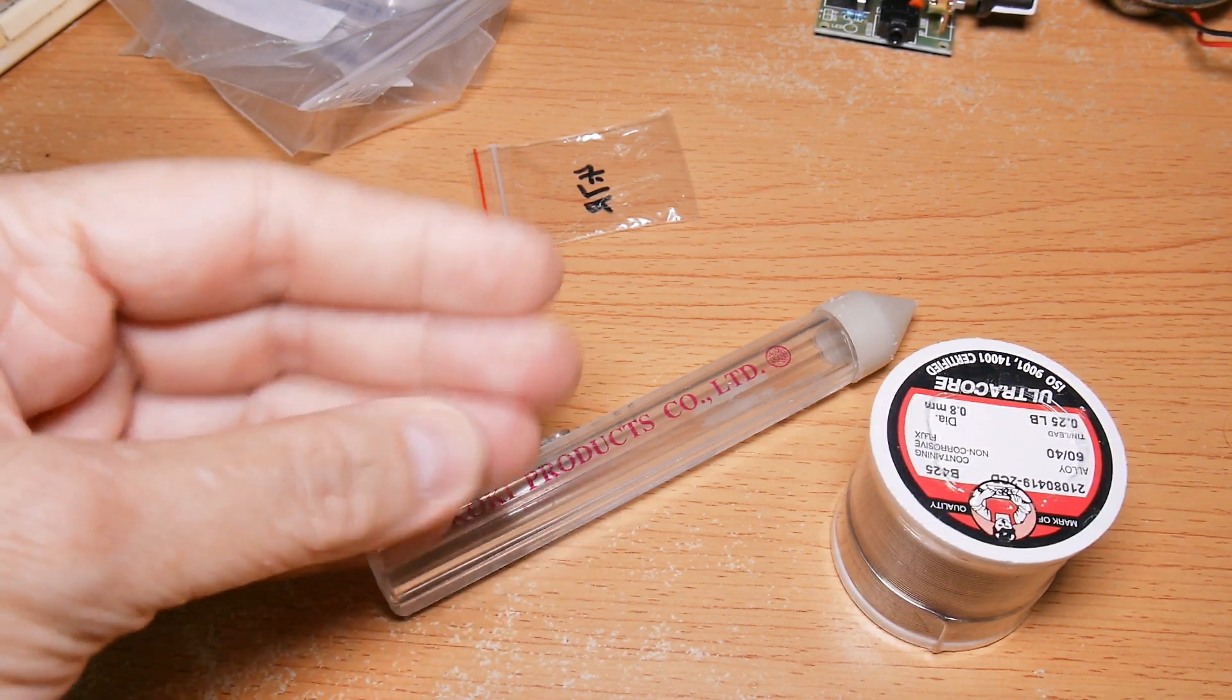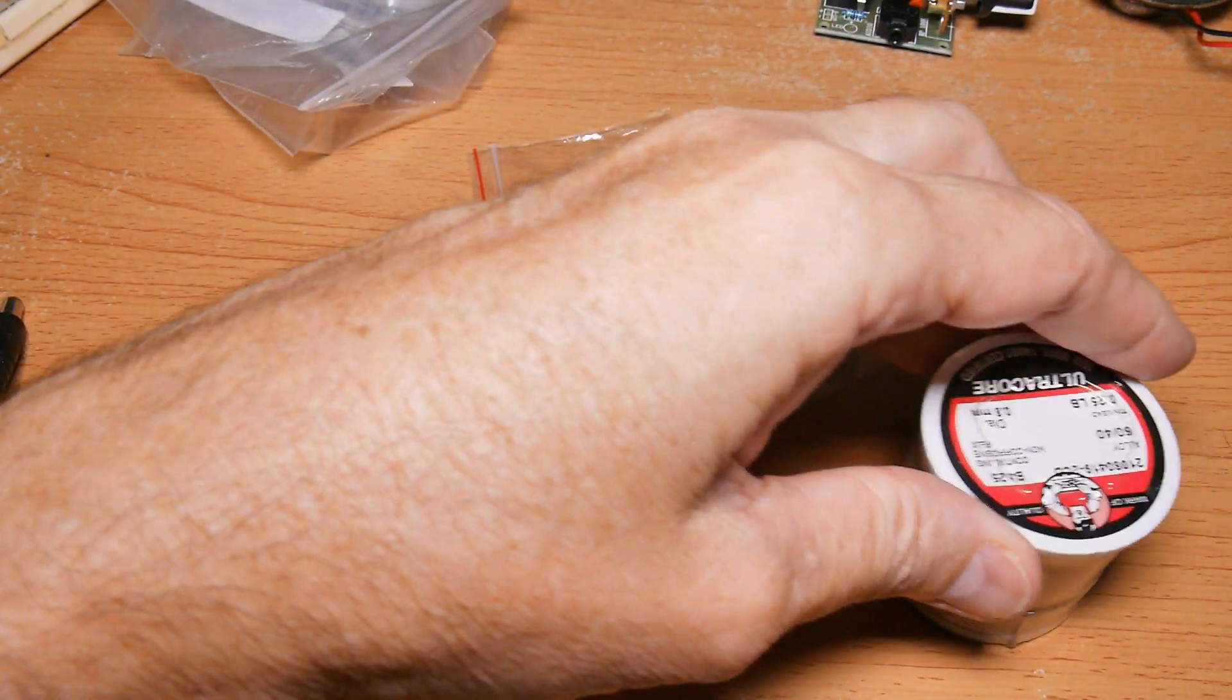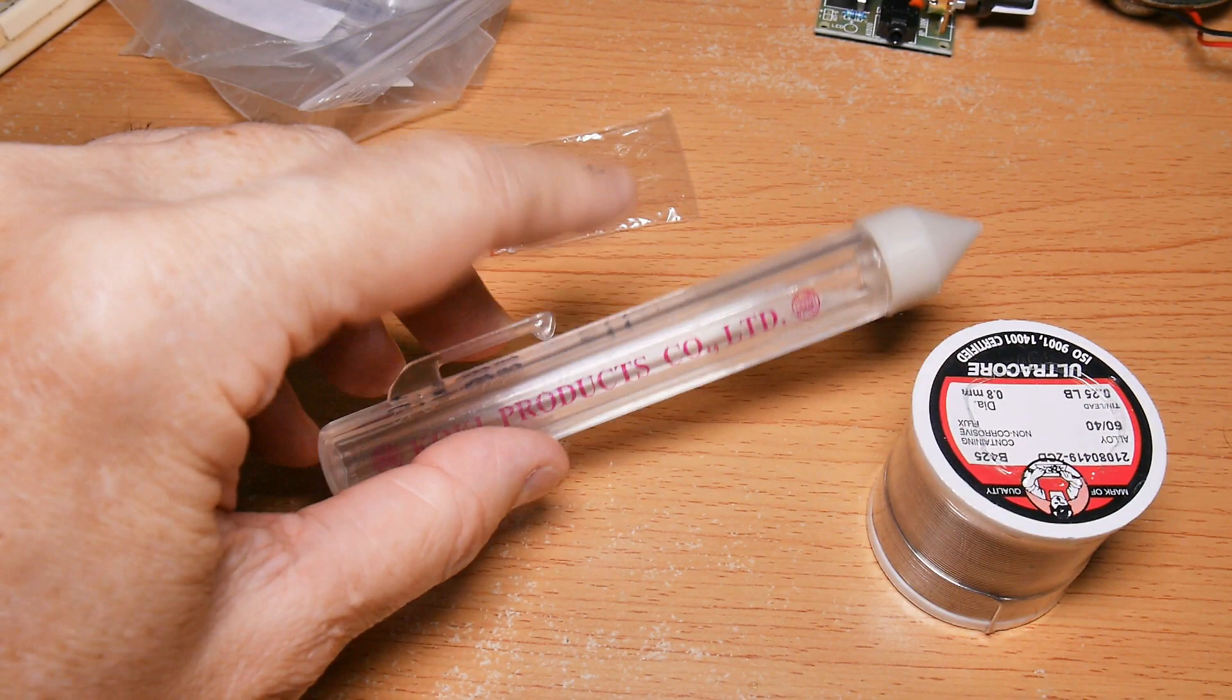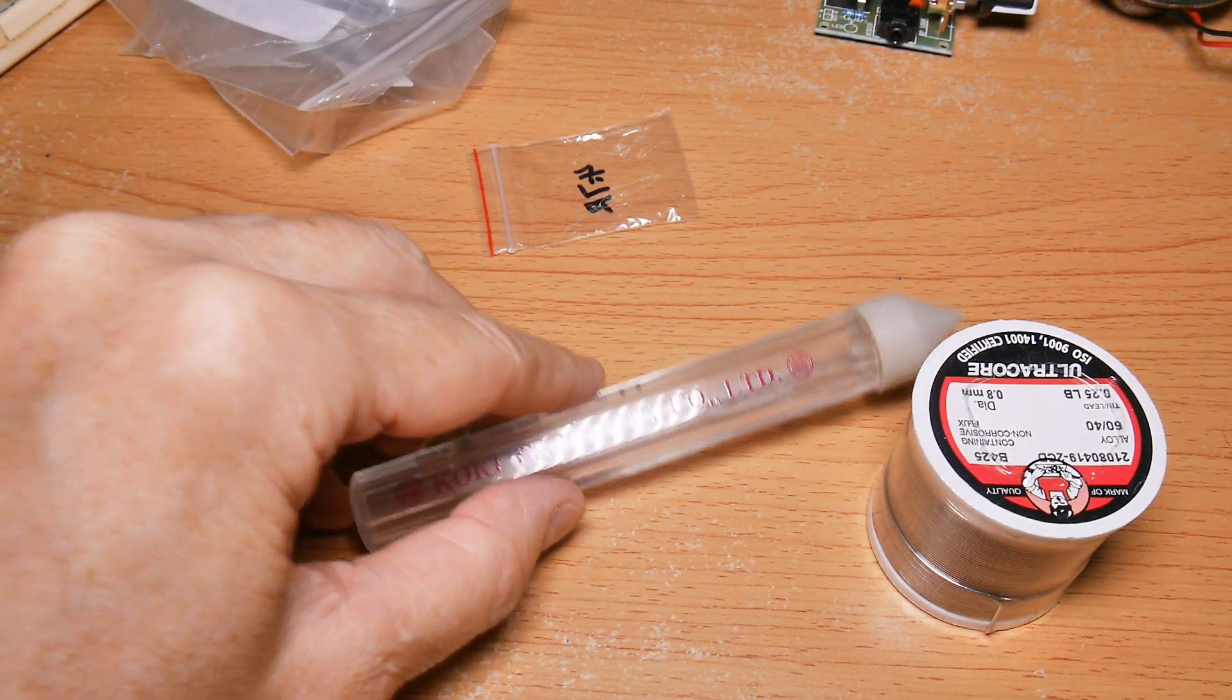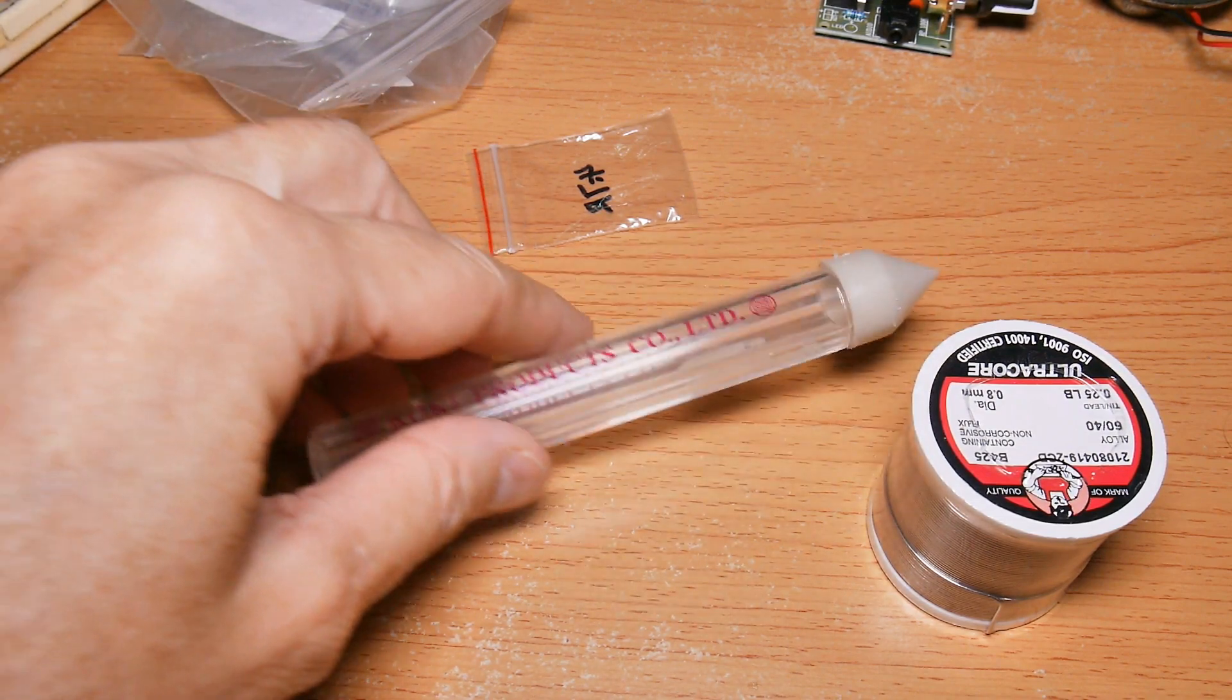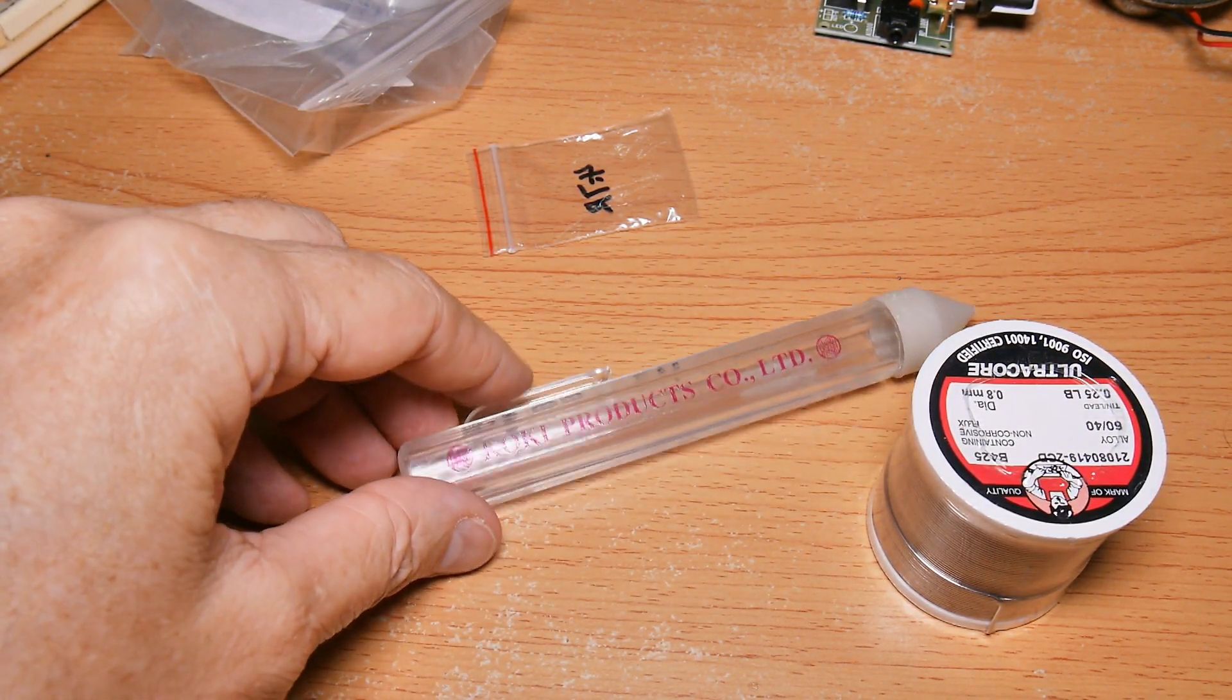The oil from your hands doesn't get on the solder as you're soldering like it does if you're holding this big roll of solder. In between uses, there's not as much oxygen in contact because it's just that little tiny hole on the top.